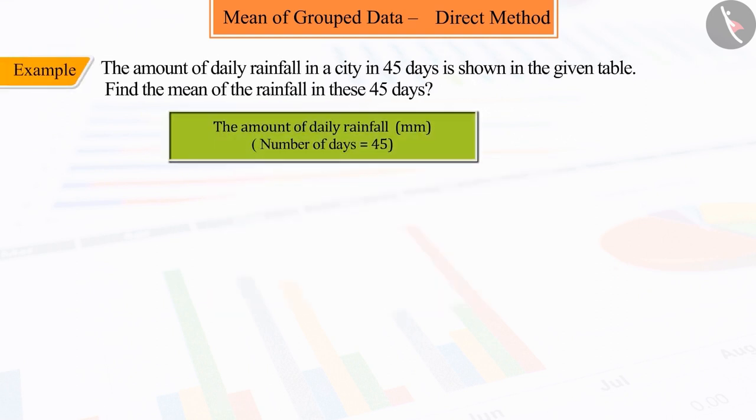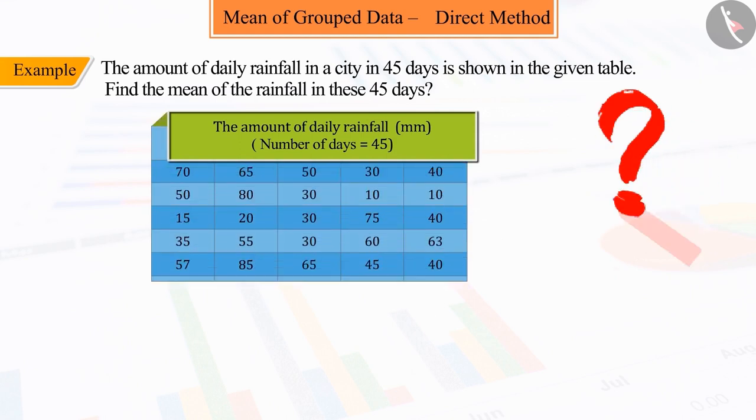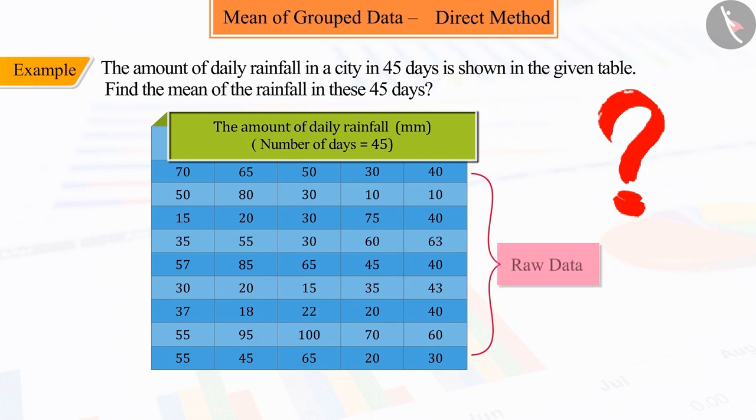The amount of daily rainfall in a city in 45 days is shown in the given table. Find the mean of the rainfall in these 45 days.